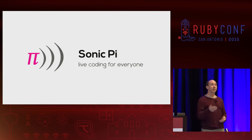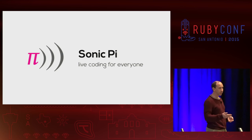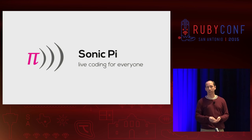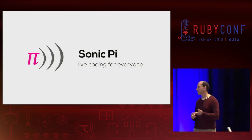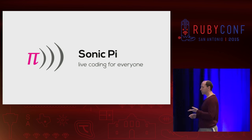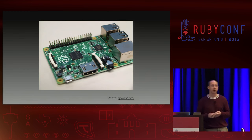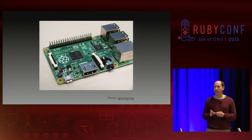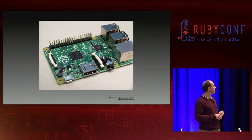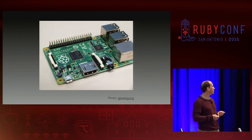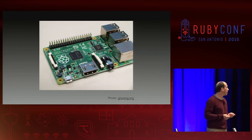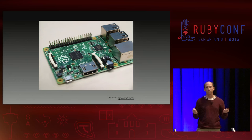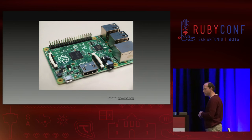He tried to make Sonic Pi as accessible as possible. It's completely free and open source. It runs on Mac, Windows, and Linux, and it was specifically designed to run on the Raspberry Pi — a credit card-sized computer that costs about $35. You plug in a USB keyboard and mouse, plug it into a monitor or TV, and you're ready to go.